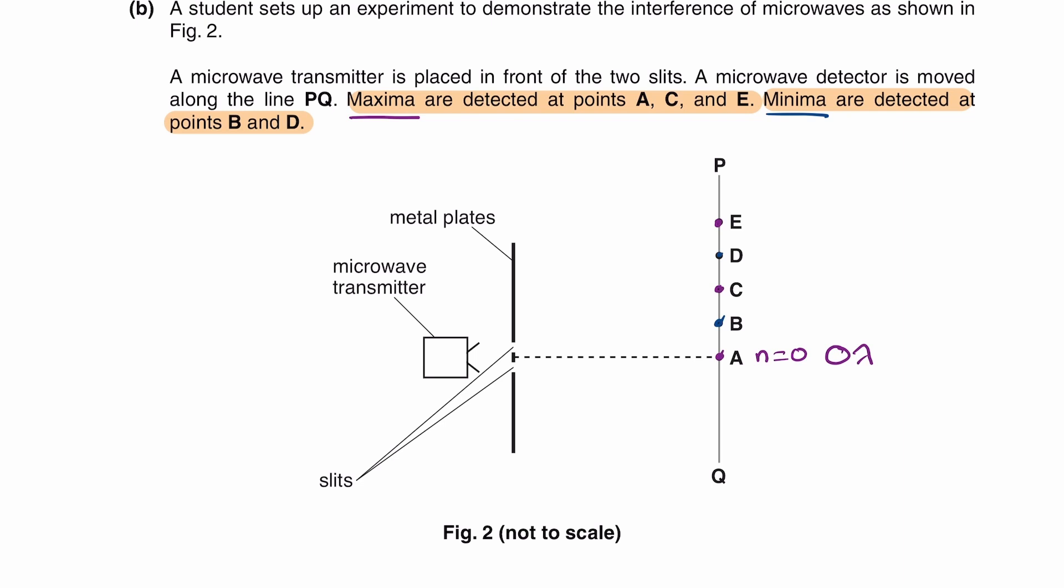For point C, our next maximum, that's our first order maximum. The path difference there is 1 lambda. And at point E, second order maximum, path difference 2 lambda. So what does path difference of 2 lambda, path difference of 1 lambda mean? So if we were to consider point E, the ray from the top slit does this, the ray from the bottom slit travels to E and looks like this. Those two rays travel different distances. The bottom slit is a bit lower, and therefore the ray from the bottom slit, this one, travels a slightly longer distance than the ray from the top slit to point E.